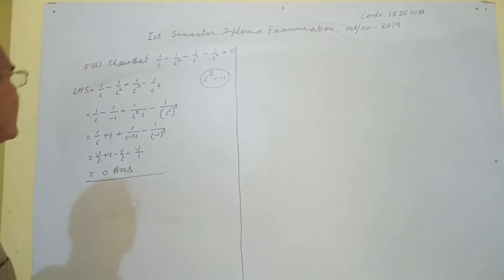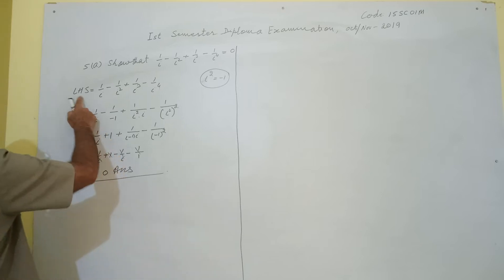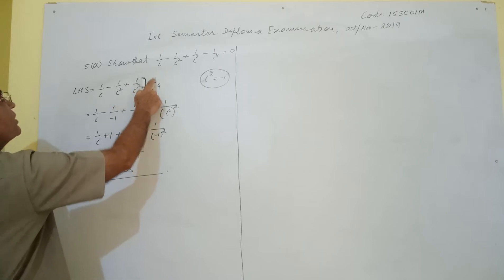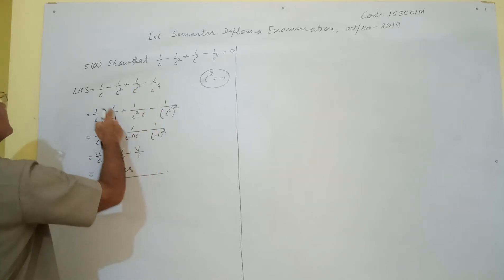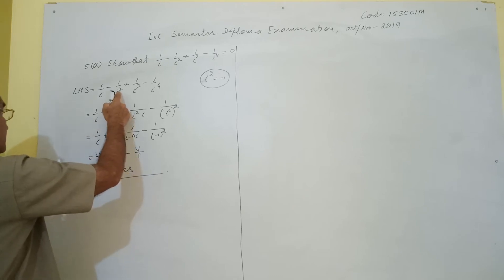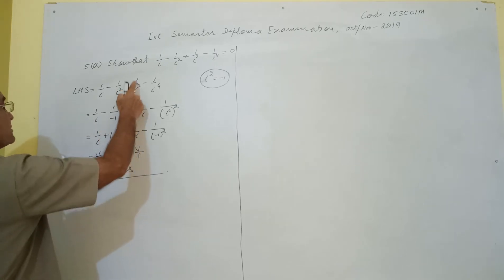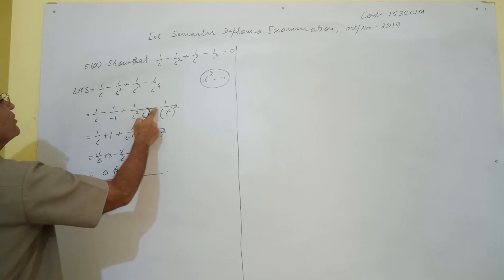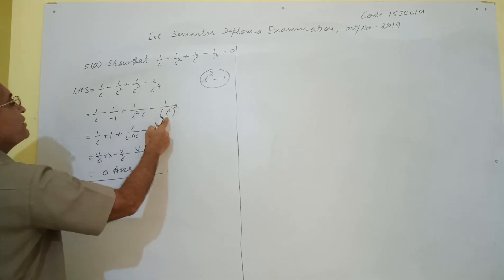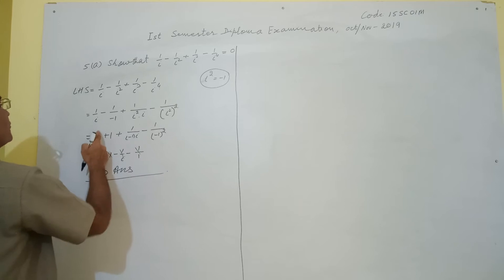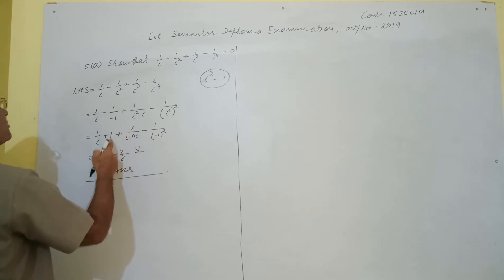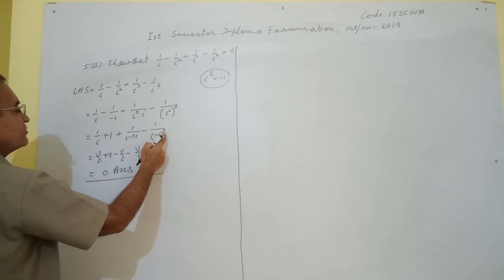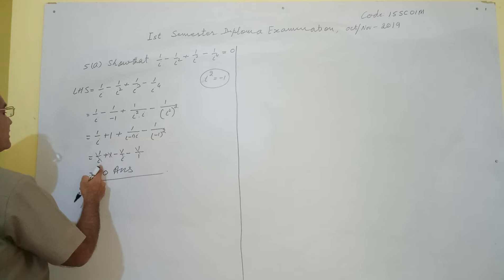LHS: 1/iota - 1/iota² + 1/iota³ - 1/iota⁴. Since iota² = -1, we have -1/iota² = -1/(-1) = +1. Then 1/iota³ can be written as 1/(iota² · iota), and 1/iota⁴ = 1/(iota²)². Substituting iota² = -1 in each term: 1/iota + 1 + 1/(-1·iota) - 1 = 1/iota + 1 - 1/iota - 1.